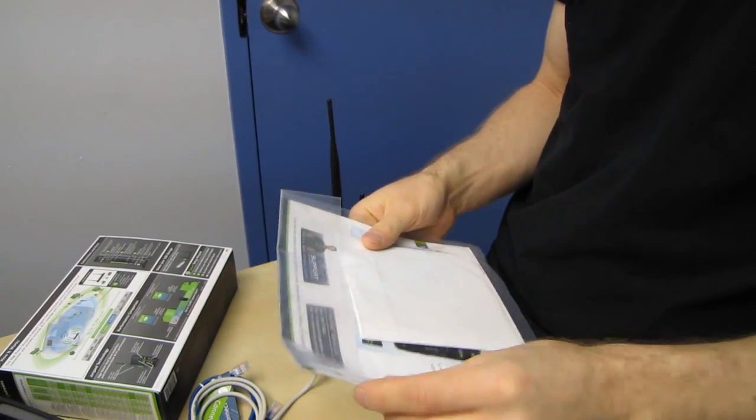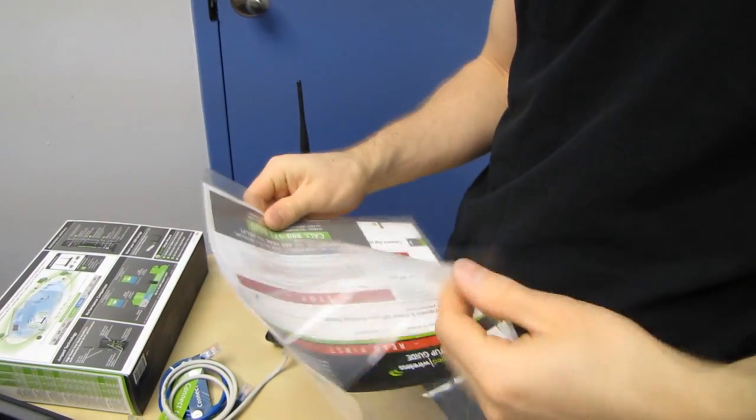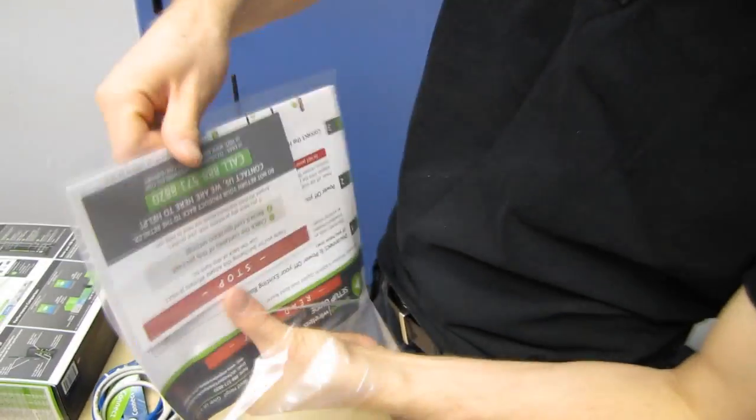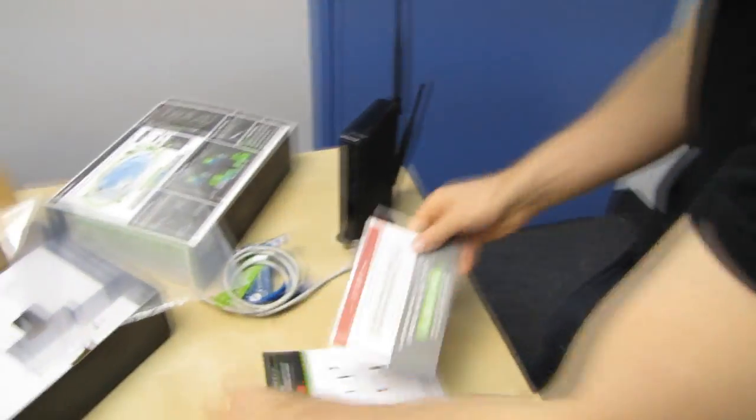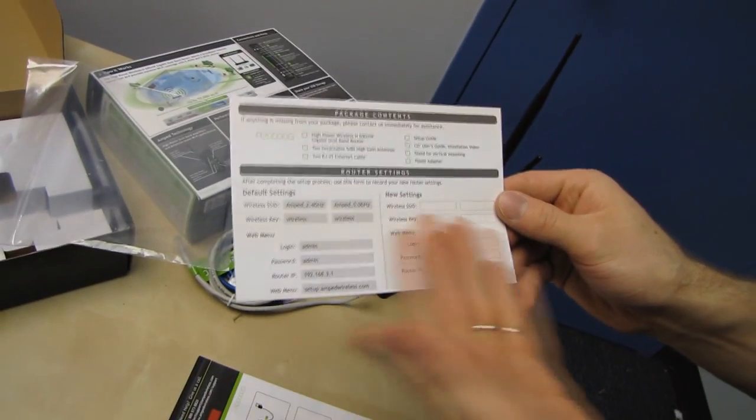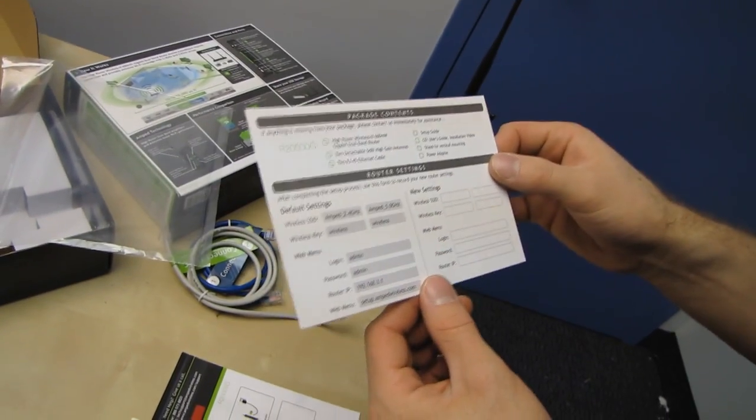So this is a setup guide, which they want you to read first. Imagine that. Stop. Thank you for purchasing this Amped wireless product. Use the back of this form to check the contents of the package, record configuration settings. Look at that. You can write it down and put it somewhere else too. So they make it very convenient for you. Very neat.